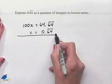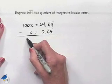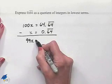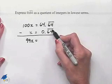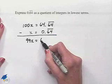Now we have it lined up to where we can subtract. 100x minus 1x is 99x. Notice that the repeating portion will continually subtract out, leaving us with just 64.